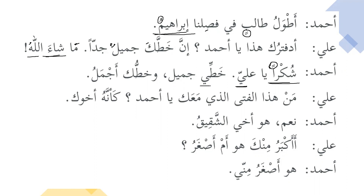Khatti jamilun — my handwriting is beautiful. Khatt is mudaf and ya al-mutakallim is mudaf ilayh. Khatti will be mubtada' and jamilun will be khabar. Khattuka ajmalu — but your handwriting is the most beautiful. If you want to translate it as 'the most beautiful,' you say ajmalu khattin; or if you want to say 'more beautiful than mine,' that is ajmalu minni. Since nothing is mentioned after it, both possibilities are there: 'your handwriting is more beautiful than mine' or 'your handwriting is the most beautiful.'